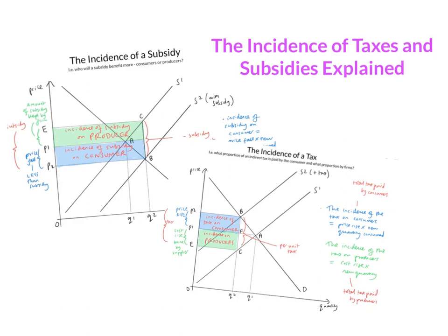What it means is looking at who subsidies or taxes affect. In the case of subsidies, we'll be looking at who gets the benefit from subsidies. In the case of taxes, we'll be looking at who pays the main cost. In both cases, the choices between consumers and producers, and as ever, it's down to relative elasticities of supply and demand. This is particularly important as we look at tackling market failure, because taxes and subsidies are some of the main instruments that we would use.